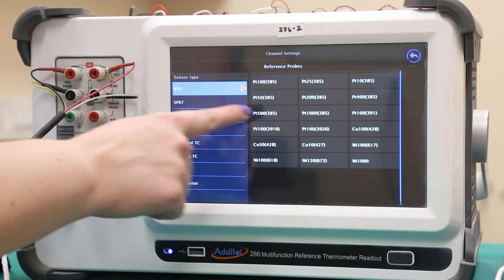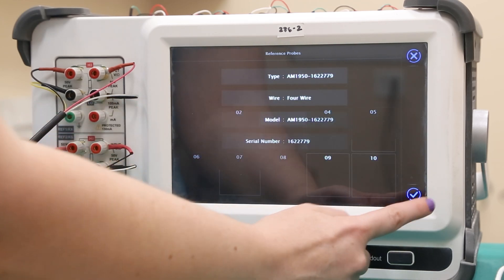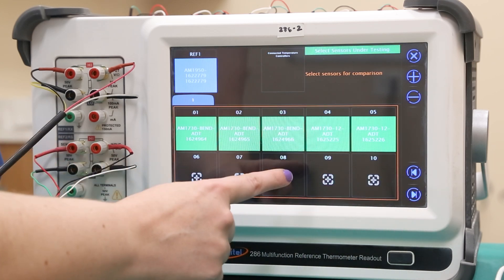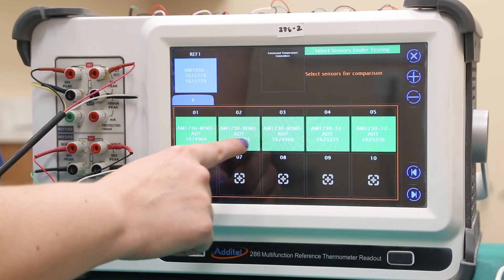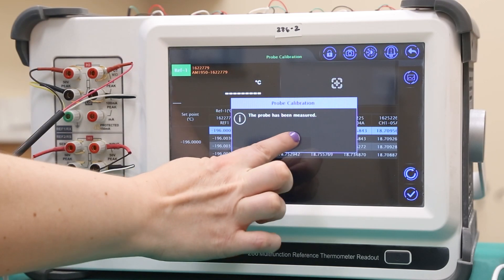First select the type of reference SPRT, connected to REF1. Then select all of the probes, which are connected to ports 1 through 5 on top of the 286. The 286 will once again automatically measure each probe according to the test configuration set at the start of the calibration.